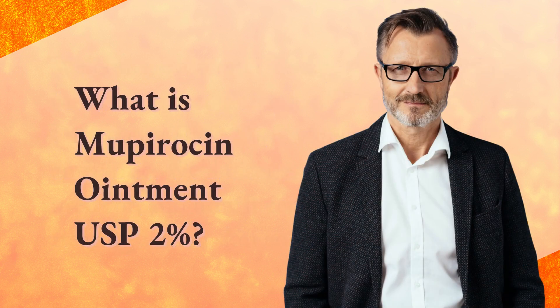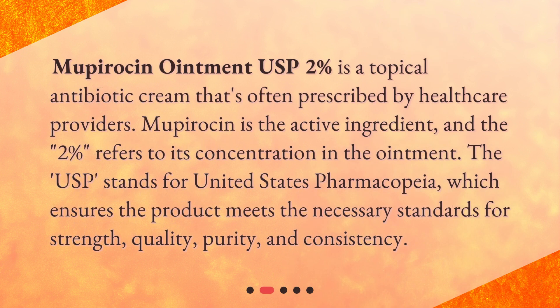What is Mupirocin Ointment USP-2%? Mupirocin Ointment USP-2% is a topical antibiotic cream that's often prescribed by healthcare providers. Mupirocin is the active ingredient, and the 2% refers to its concentration in the ointment. The USP stands for United States Pharmacopeia, which ensures the product meets the necessary standards for strength, quality, purity, and consistency.